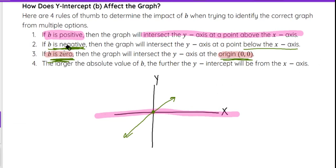And then finally, we talked about this briefly in the previous video, but the larger the absolute value of b, the further the y-intercept will be from the x-axis. So we used that word absolute value a little bit in the last video when we were talking about slope.